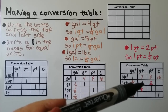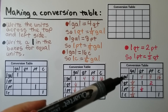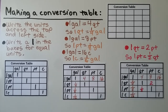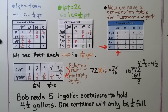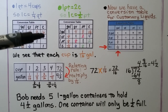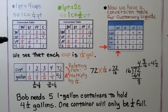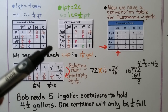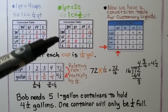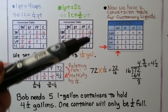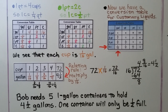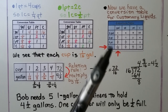One quart is two pints, so one pint is one-half quart. One quart is four cups, so one cup is one-fourth of a quart. One pint is two cups, so one cup is one-half of a pint. Now we have a complete conversion table for customary liquids.